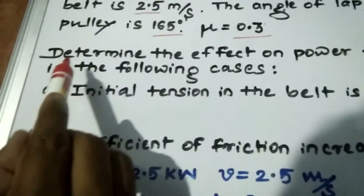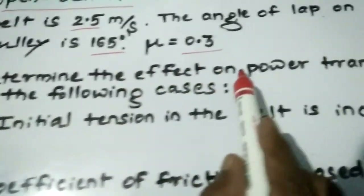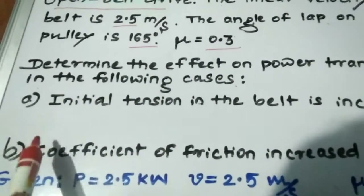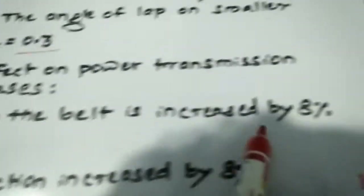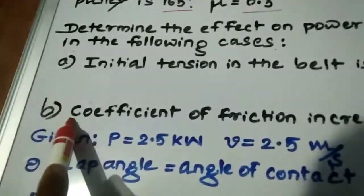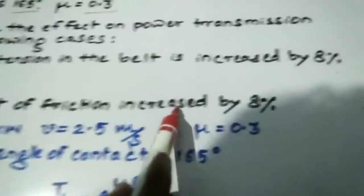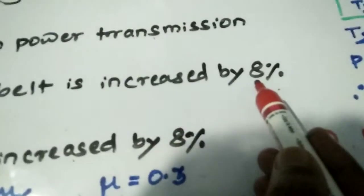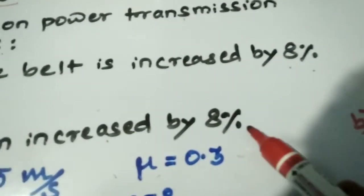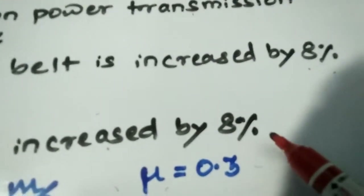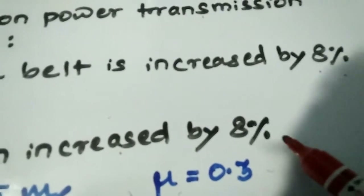The coefficient of friction is given as 0.3. The problem asks us to determine the effect on power transmission in the following two cases: Case A - initial tension in the belt is increased by 8%, and Case B - coefficient of friction is increased by 8%. You have to determine the effect on power in terms of percentage.